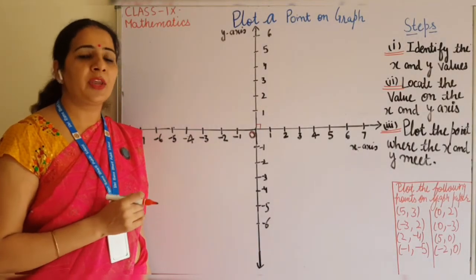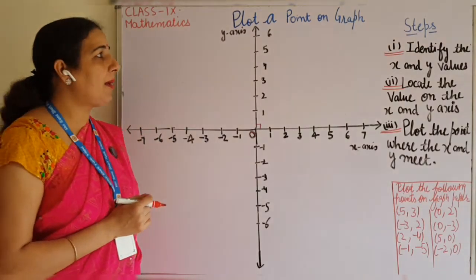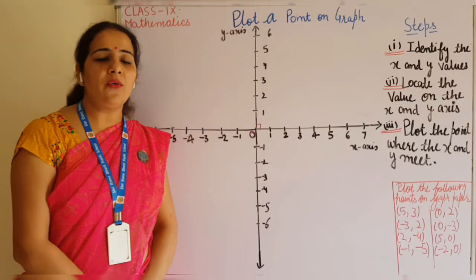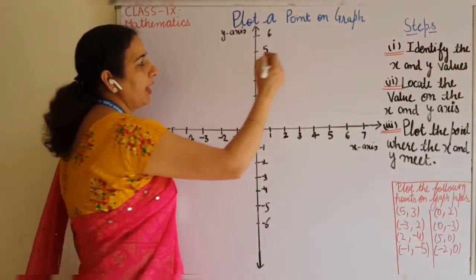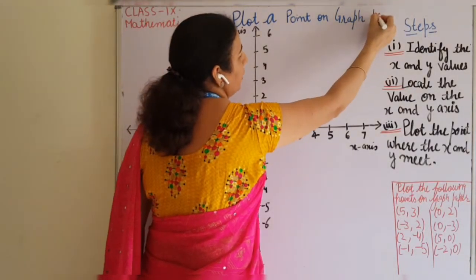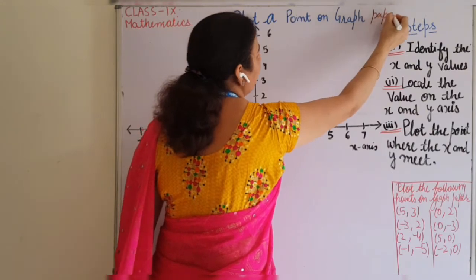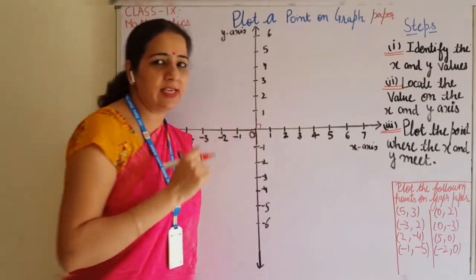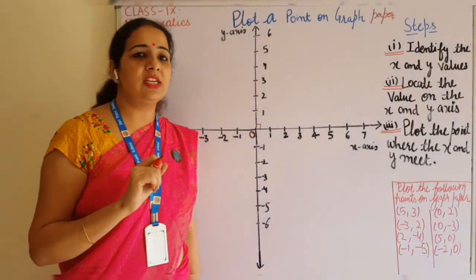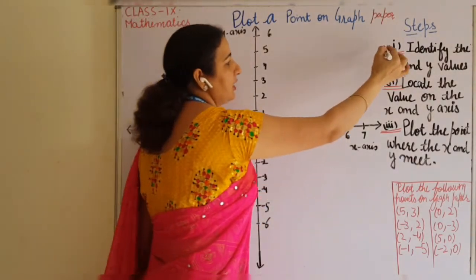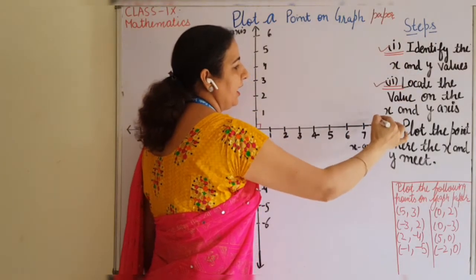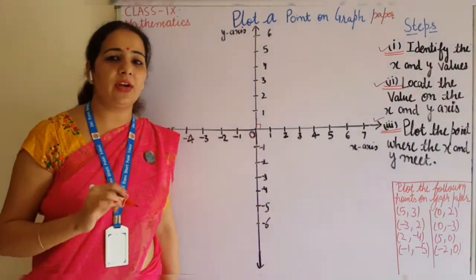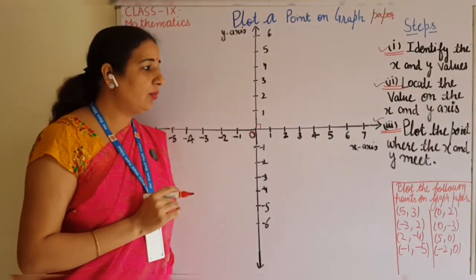Today we are going to learn more about how to plot points on a graph paper. I have written some examples here and we will work through them. Before that, you just need to follow these three steps — first, second, and third. If you follow these three steps, you will definitely be able to plot the points very correctly.